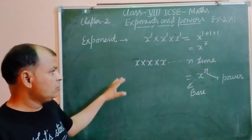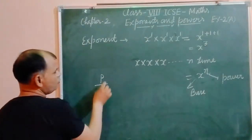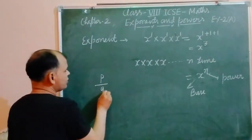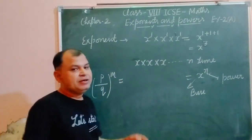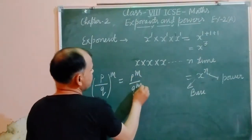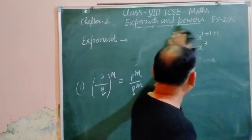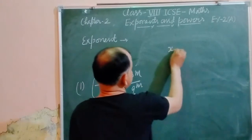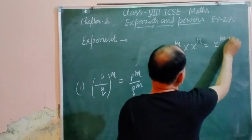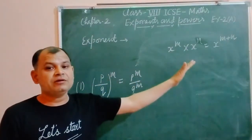Now we discuss a few rules of exponents. If there are two numbers in fraction form like (p/q) to the power m, then we can write it as p to the power m over q to the power m individually. This is our first rule. If x to the power m multiplied by x to the power m, we get x to the power m plus m — when same base numbers are in multiplication, their powers are added.